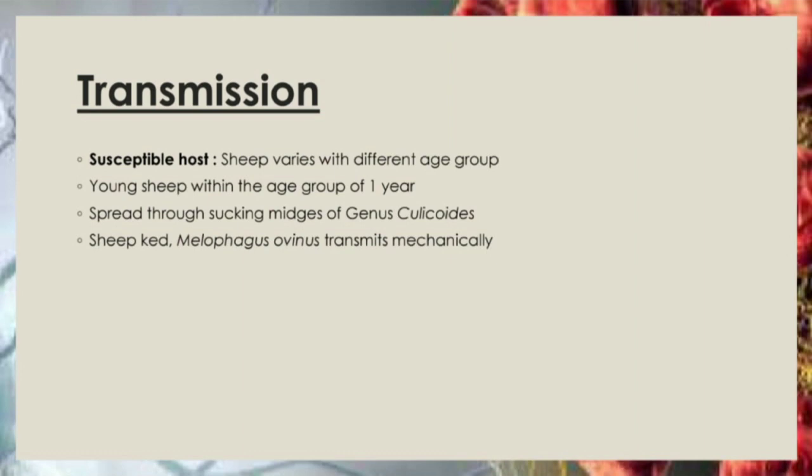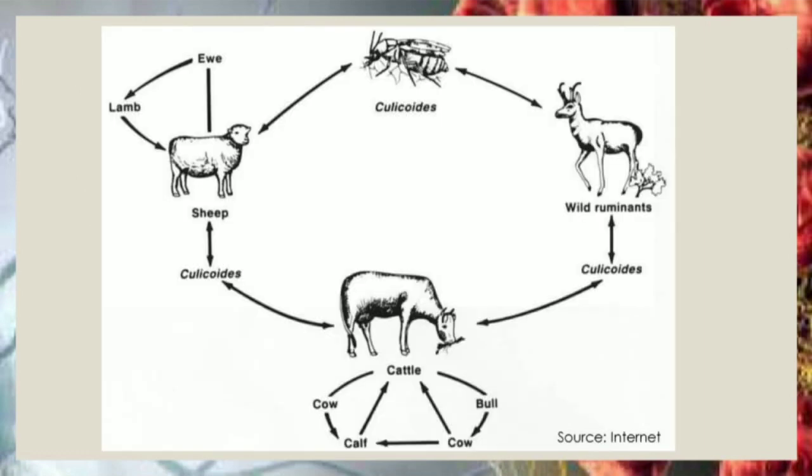Susceptible host: Sheep vary in susceptibility with different age groups. Young sheep within the one-year age group are more susceptible. The disease is transmitted by insects, particularly biting midges of the Culicoides species, as shown in the transmission cycle.